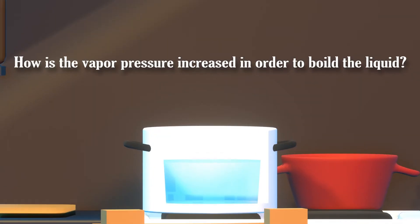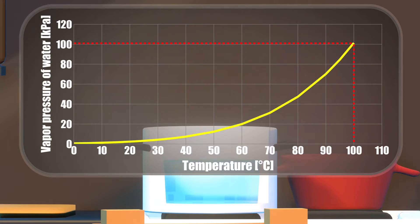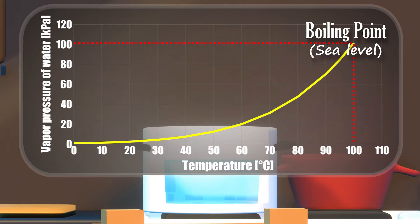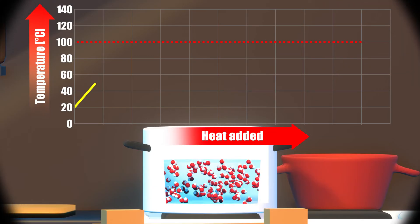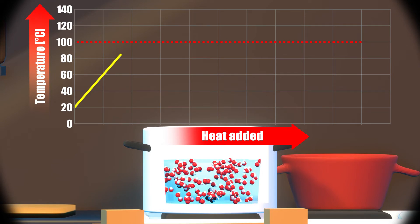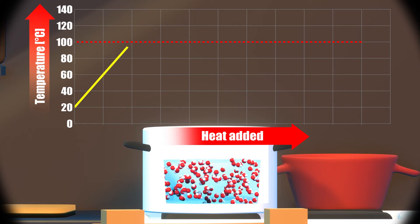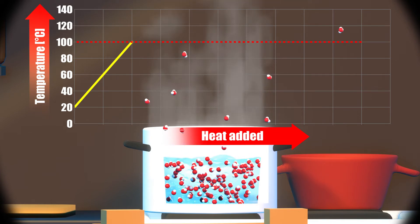The vapor pressure can be increased by raising the temperature of the liquid, and thus boiling is induced when the liquid reaches its boiling point. As the temperature is increased, the molecules move more, and more of them can break free from their neighbors to enter the gas phase, increasing the vapor pressure. When the temperature increases, the molecules have more energy to change state, increasing the vapor pressure.